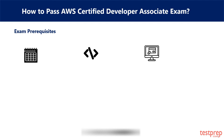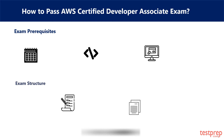Exam Structure. The AWS Developer Associate Certification Exam has MCQ type questions, divided into two types. First, multiple choice questions, where you only have to select one correct option out of four options. Second, multiple response questions, where there can be multiple correct answers from the options given.